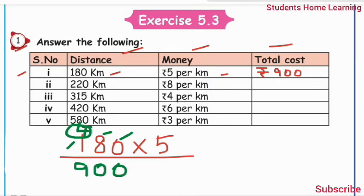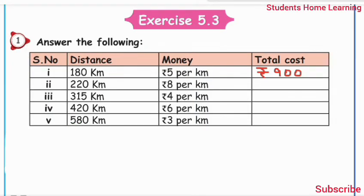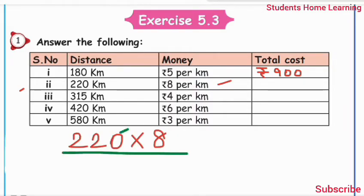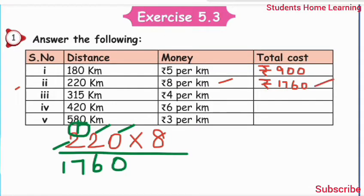Second sum: 220 km, rupees 8 per km. 220 multiply by 8: 8 times 0 is 0, 8 times 2 is 16, write 6, carry 1. 8 times 2 is 16, plus 1 is 17. Answer: 1760 rupees.